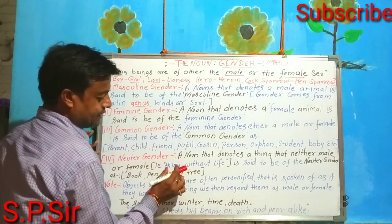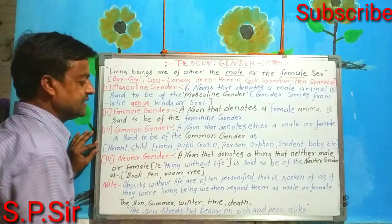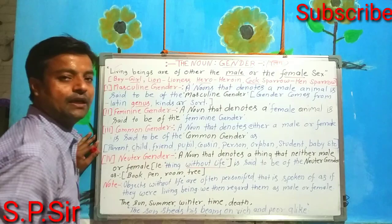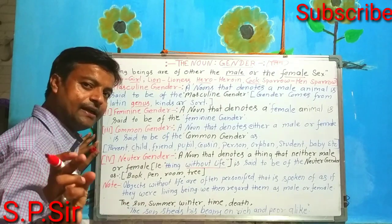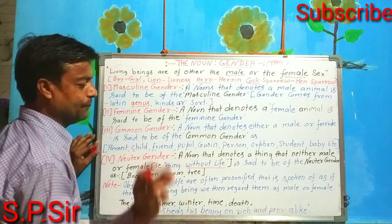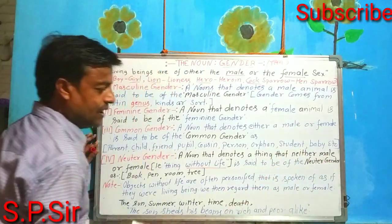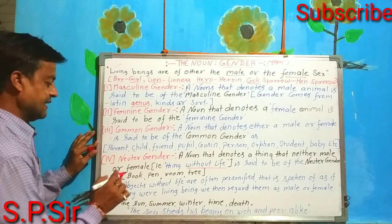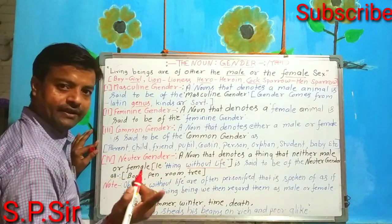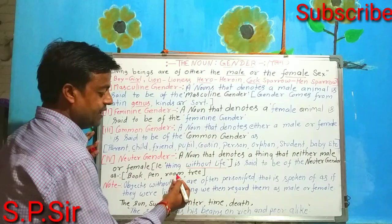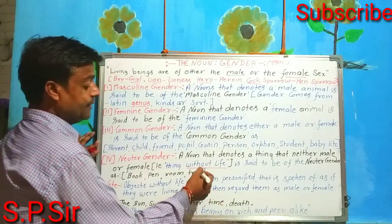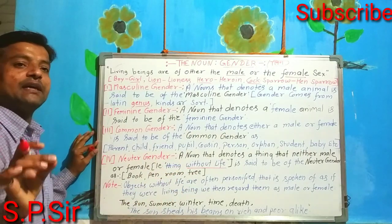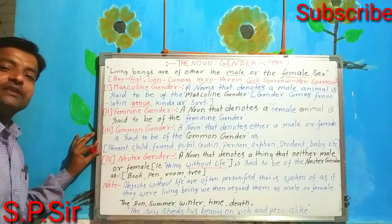Neutral gender refers to things without life — non-living things. For example: book, pen, room, camera, tree. These are all non-living things. So these are already known as the neutral gender.